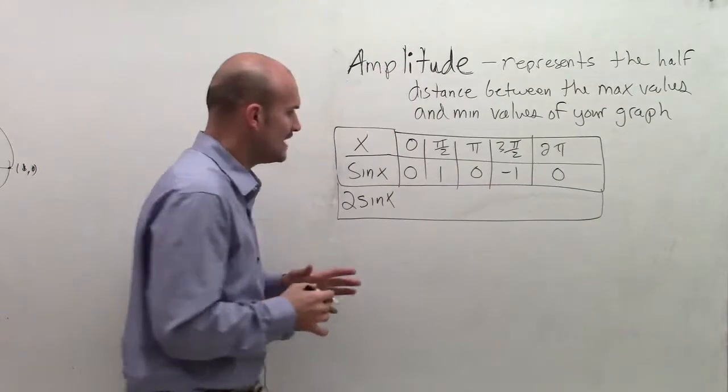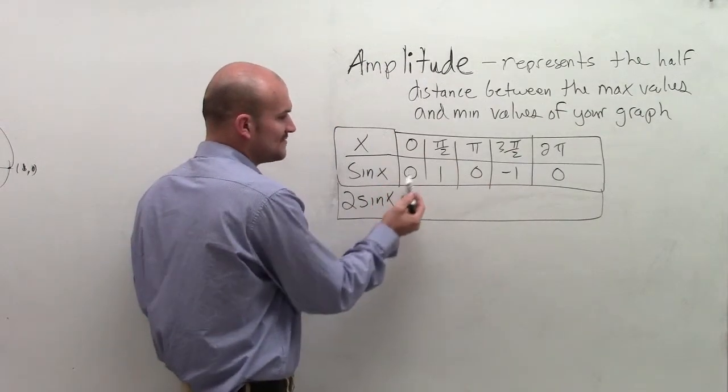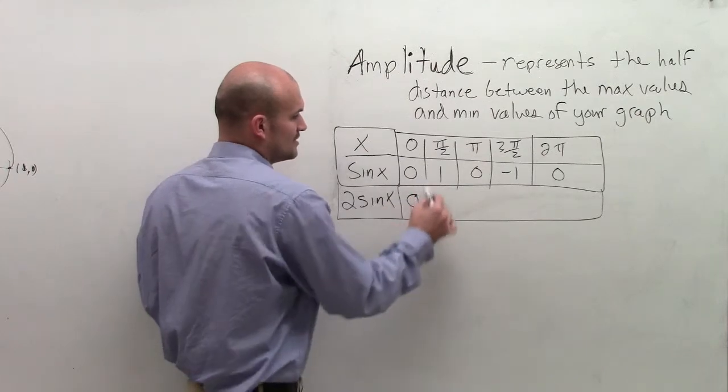Well, what you can see now is 2 sine of x, sine of 0 would still be 0. Multiply by 2 would still give me 0.